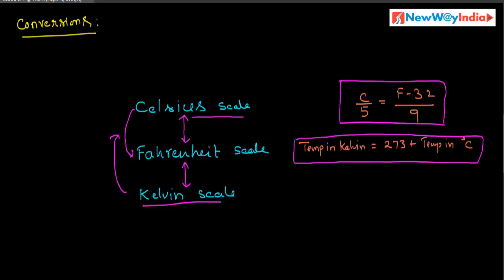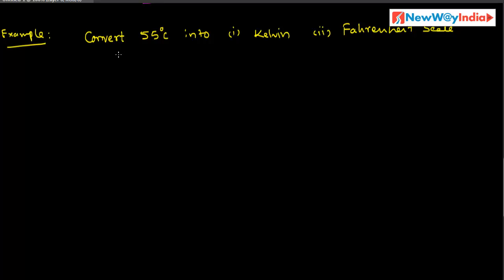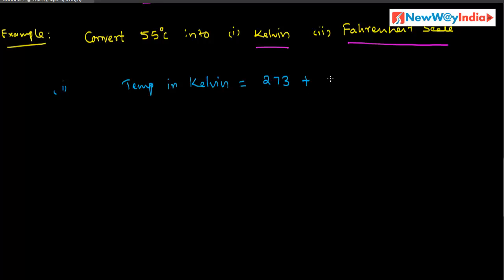Let us consider an example. Convert 55 degree Celsius into Kelvin scale and Fahrenheit scale. Here we have to convert this Celsius measurement into Kelvin and Fahrenheit scales. For Kelvin and centigrade, the relation is: temperature in Kelvin is equal to 273 plus temperature in degree centigrade. The temperature in degree centigrade given here is 55 degree centigrade.